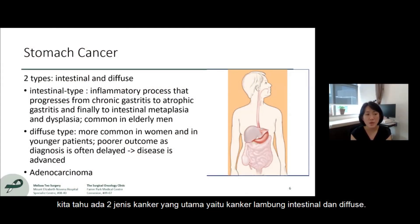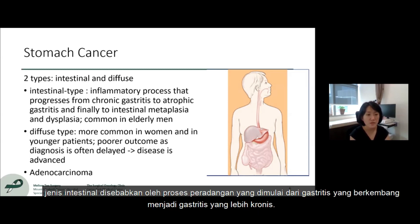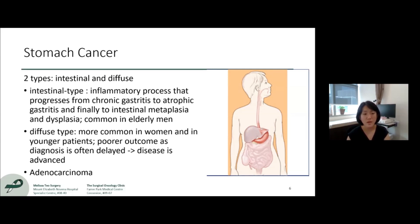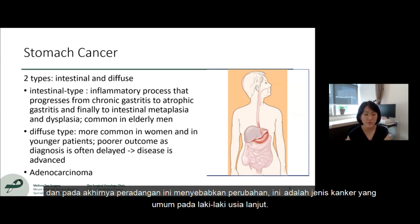With stomach cancers, we know that there are two main types: the intestinal and the diffused stomach cancers. The intestinal type is caused by an inflammatory process which starts from gastritis, then progresses to a more serious kind of gastritis, and finally the inflammation results in changes in the inner lining of the stomach. This is a type of cancer that is very common in elderly men.